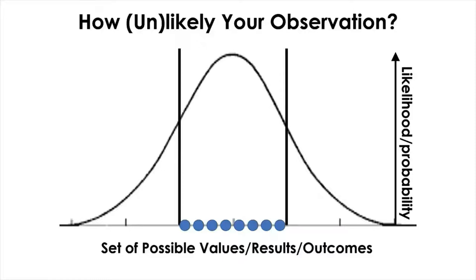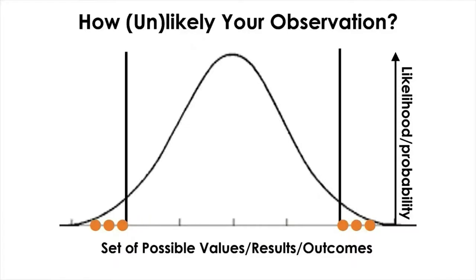So what that means is that the more typical or mediocre values such as the average are concentrated in the middle under a normal distribution — these values are more likely to be observed. On the other hand, if you go out to the tail, that's where you can find more extreme data. They are atypical, and the normal distribution represents them by a low likelihood, low probability.